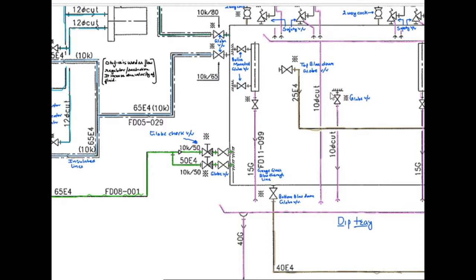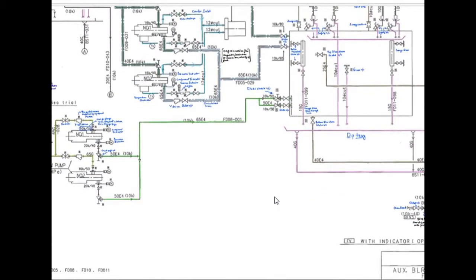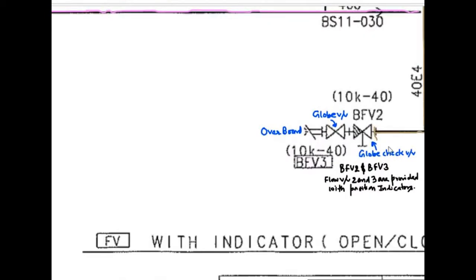Now, you can see, we have top blow-down globe valve. This valve, top blow-down globe valve and bottom blow-down valve, they are both connected. These both lines are connecting and it's going to overboard. Here you can see the symbol of globe check valve. It's again, non-return valve, then we have a globe valve and then we have overboard.